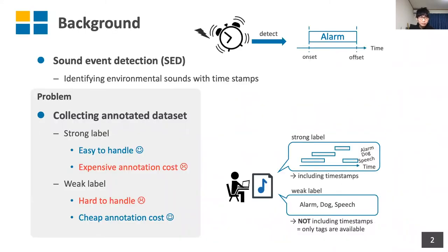This is the background of our research. Sound Event Detection, or SED, is an important technique for understanding environmental sounds, and the goal is identifying them with timestamps. One of the problems of SED is collecting annotated datasets, which determines the labeling cost. Label types are divided into two types: strong label and weak label.